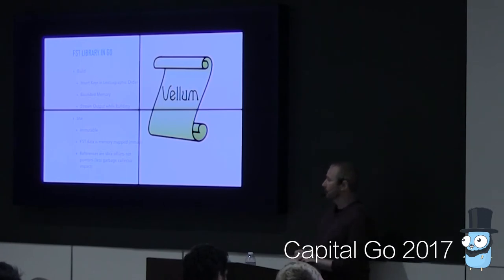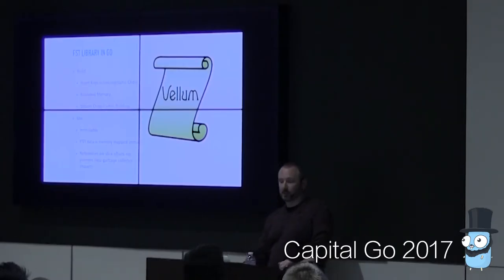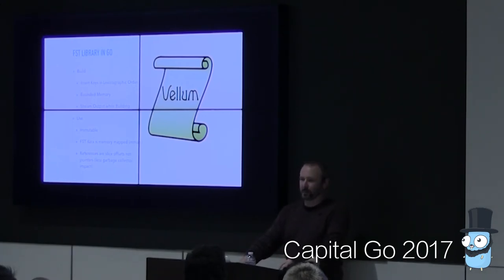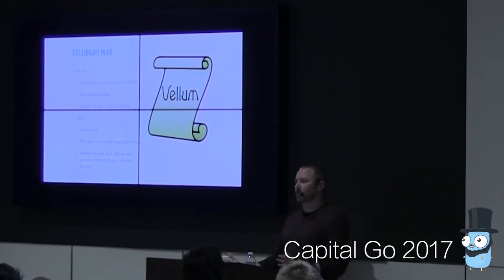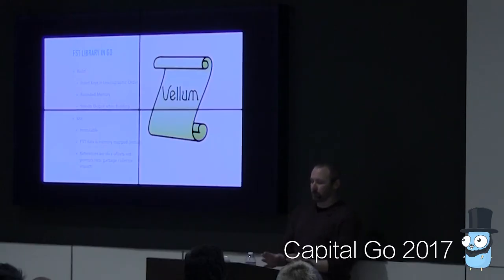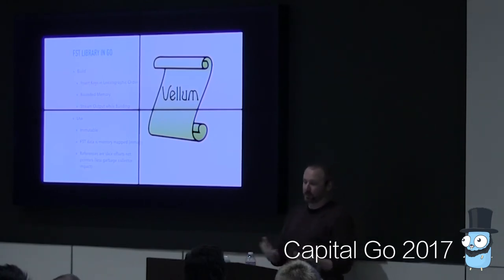We built a library called Vellum which implements FSTs in Go. This implementation has two distinct phases: a build phase and a separate use phase. In the build phase, we have to insert keys in lexicographic order. That sounds like a burden, but it comes with important payoffs. The main one is that we can do this with bounded memory use — we can build an FST over millions of keys using a constant amount of memory throughout. We can also stream the output while building, so we're not accumulating a gigantic in-memory structure before serializing. We can pipeline both the disk and CPU resources.